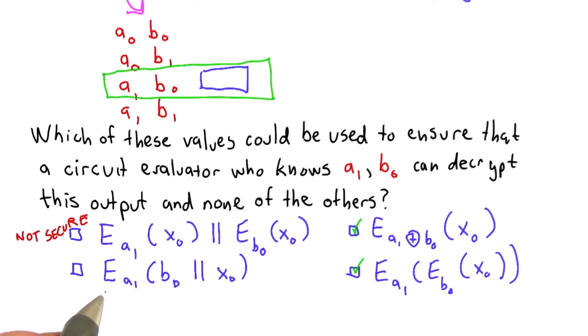The second possibility has a similar problem. If the evaluator knows a1, they can obtain the value of x0. That's not secure because they can decrypt two outputs in this table.